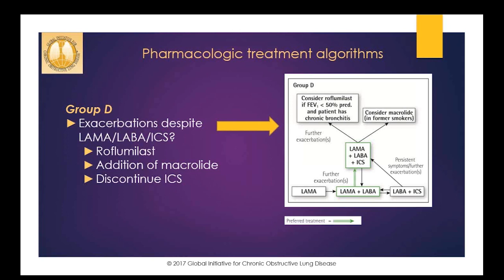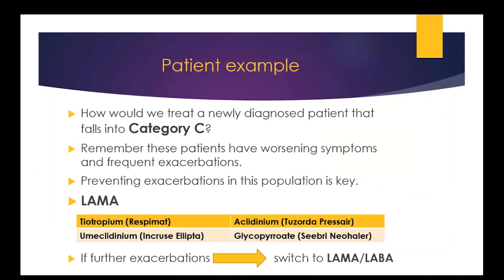If patients treated with LABA-LAMA-ICS still have exacerbations, additional options include adding roflumilast — considered in patients with FEV1 less than 50% predicted, chronic bronchitis, and particularly if they've had at least one hospitalization for an exacerbation in the last year — or adding a macrolide, with the best evidence for azithromycin, though antibiotic resistance should be considered. Another option is to remove the ICS: if it's not helping and the patient has increased risk of adverse effects, especially pneumonia, there's no harm in discontinuing it.